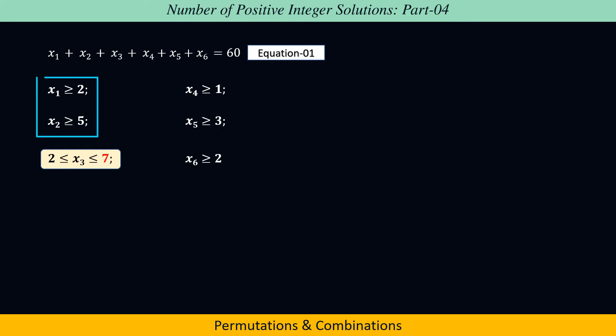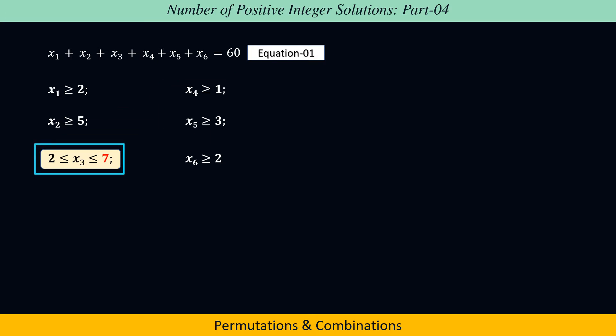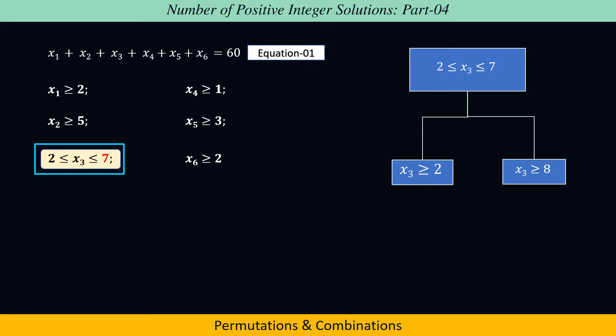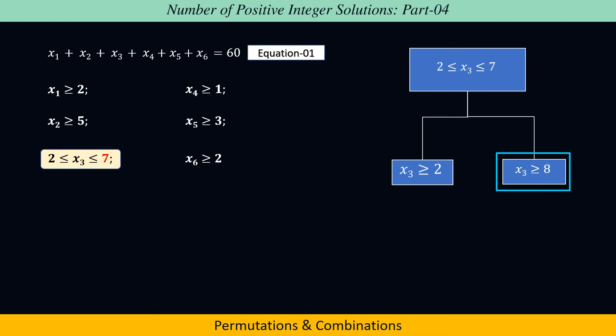We know how to deal with the restrictions imposed on x1, x2, x4, x5, and x6, but not x3. To deal with this problem, we will make two cases: case 1, where x3 ≥ 2, and case 2, where x3 ≥ 8. Then we will find the number of non-negative integer solutions of equation 1 in both cases.